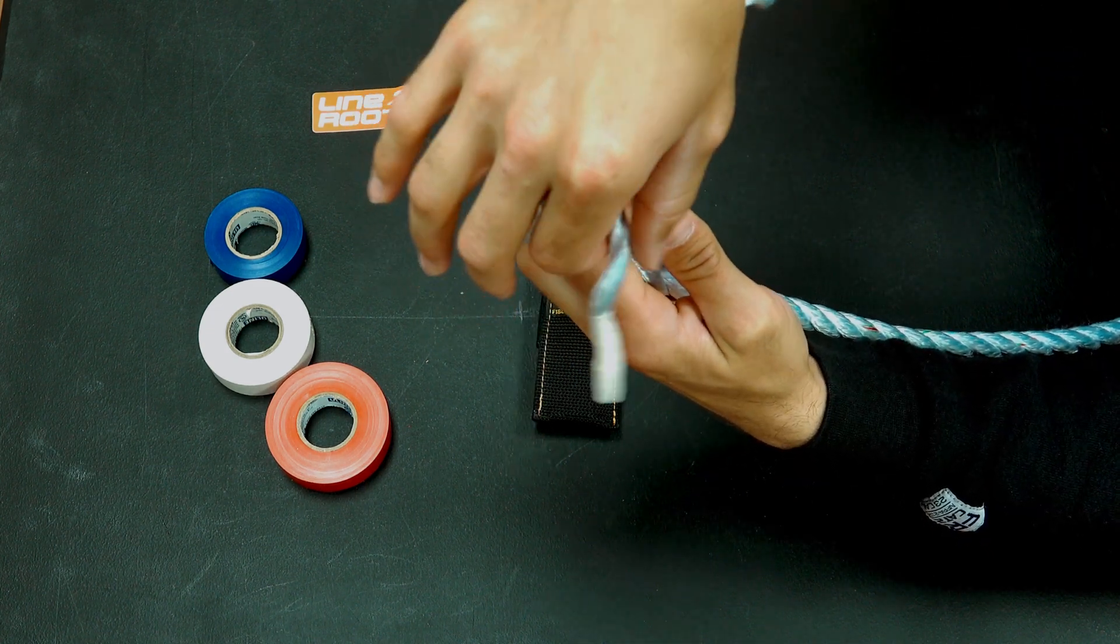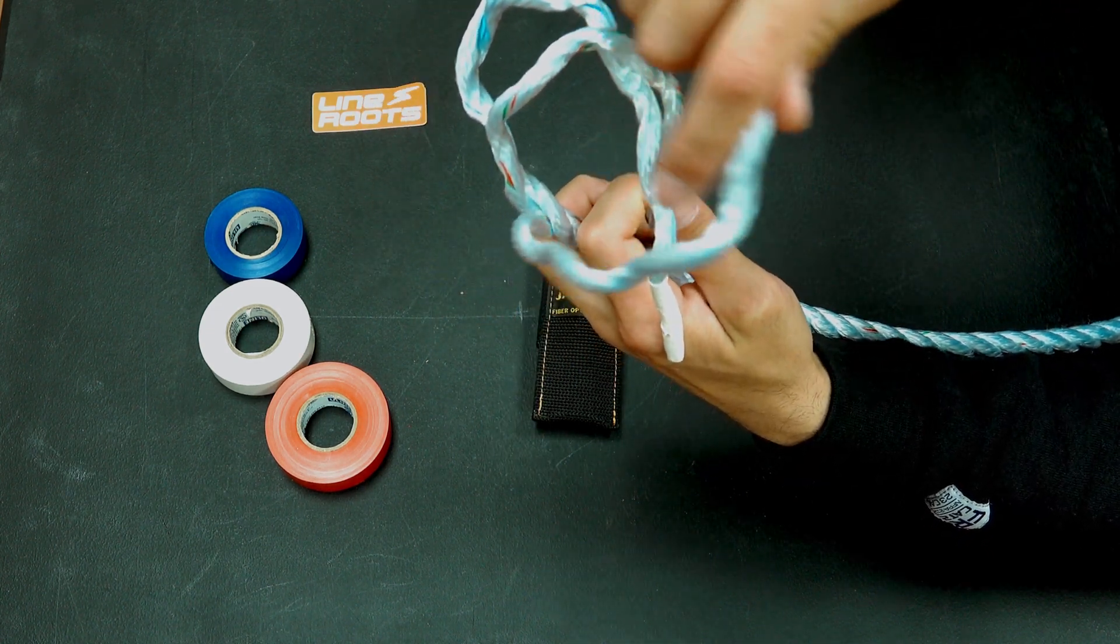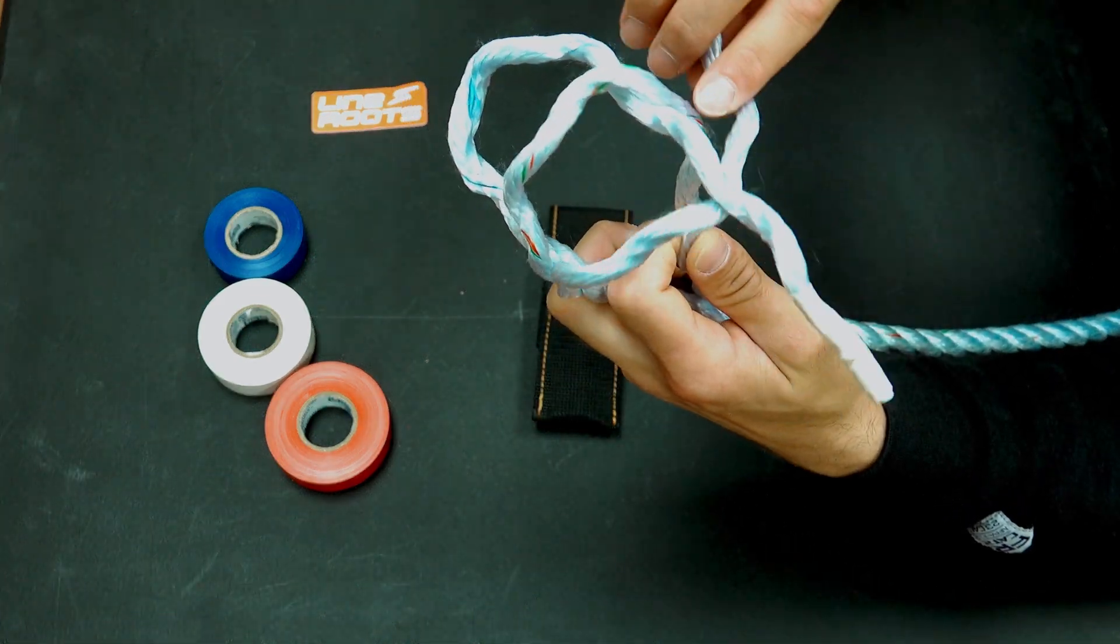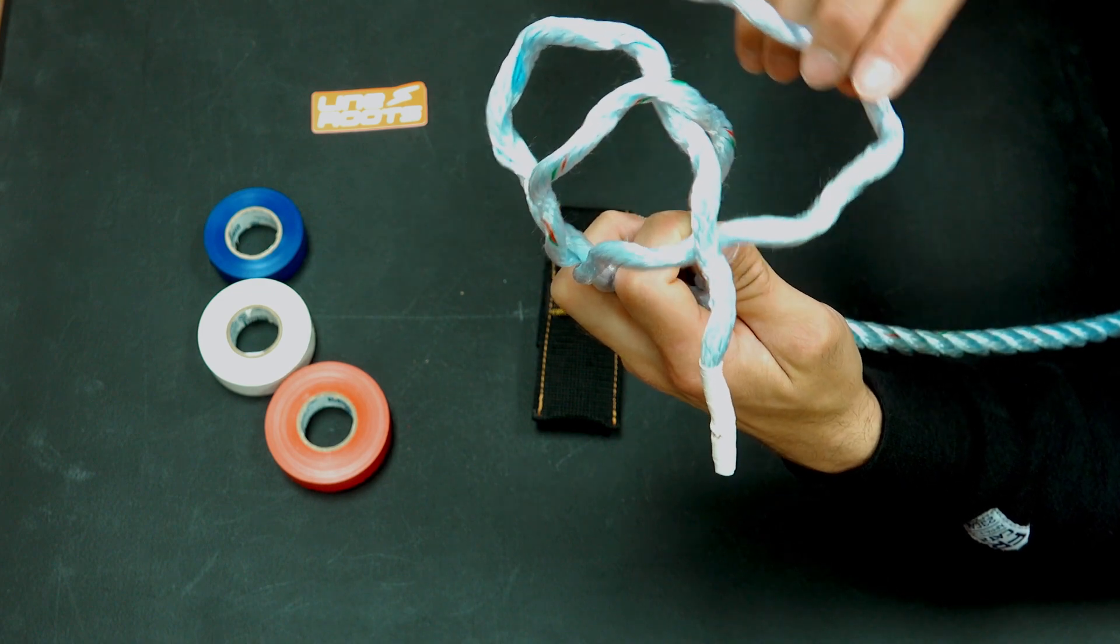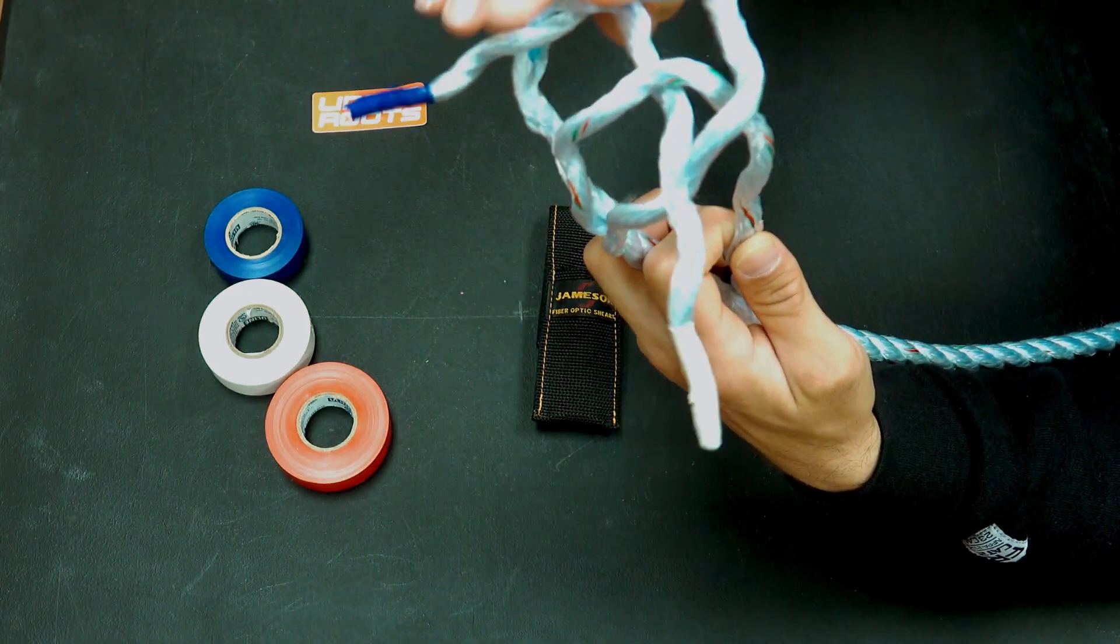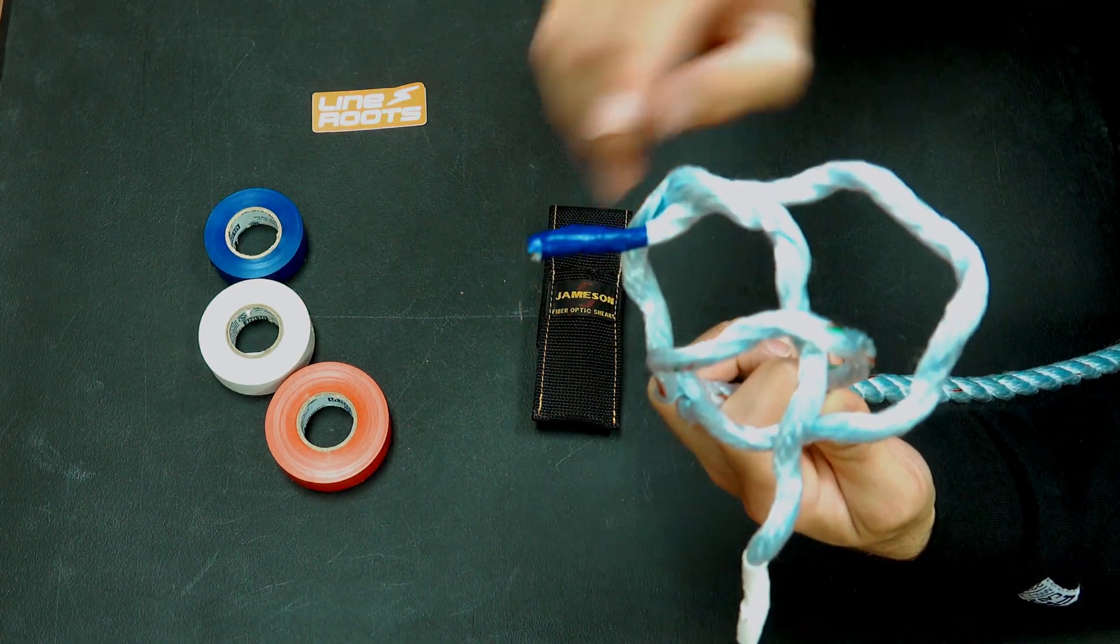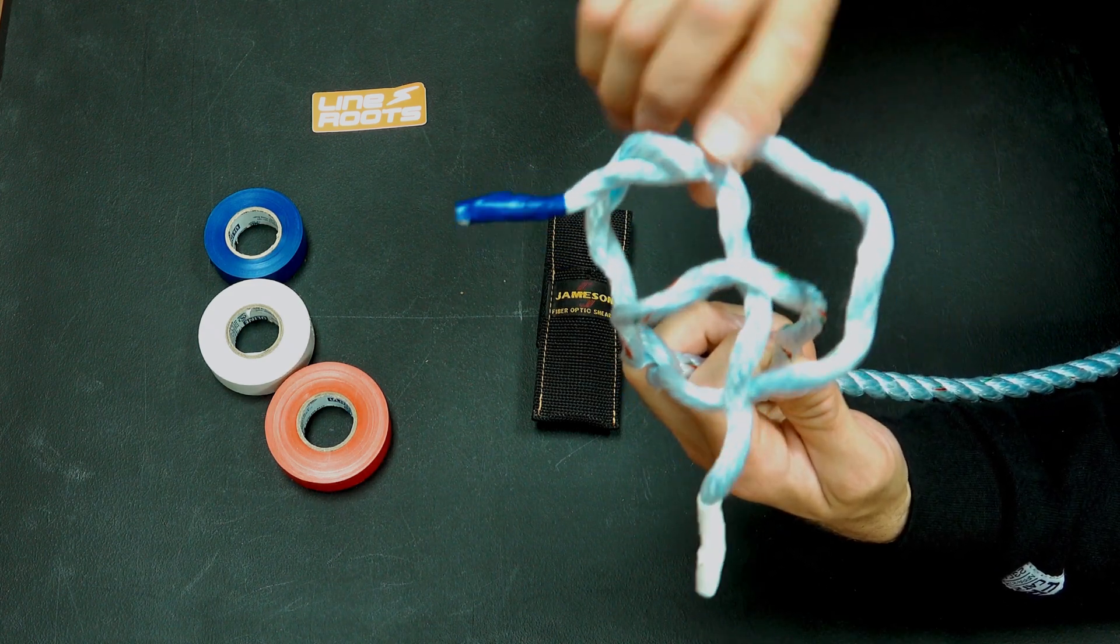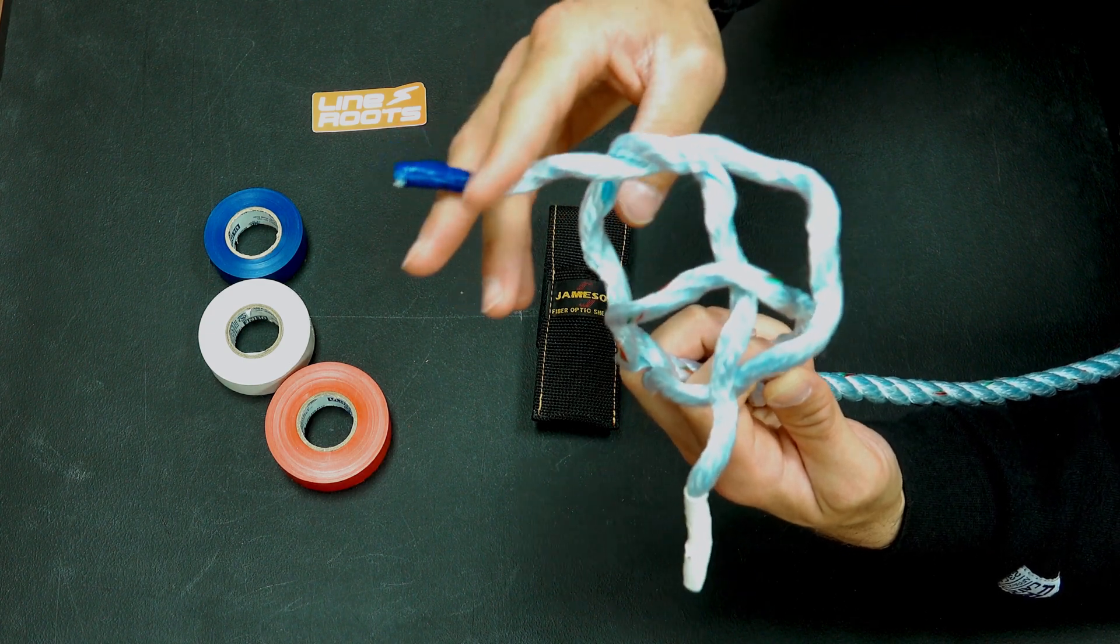Just like this, then I'm going to go around my white and then back through my white strand on the back side with my blue rope.